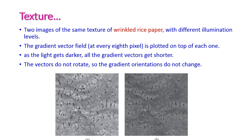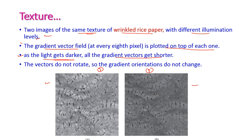Two images of the same texture of wrinkled rice pepper are given — the first with brighter illumination and the second with darker illumination. The gradient vector field is plotted on top of each one. As the light gets darker, all the gradient vectors get shorter, but the vectors do not rotate, so the gradient orientation does not change.